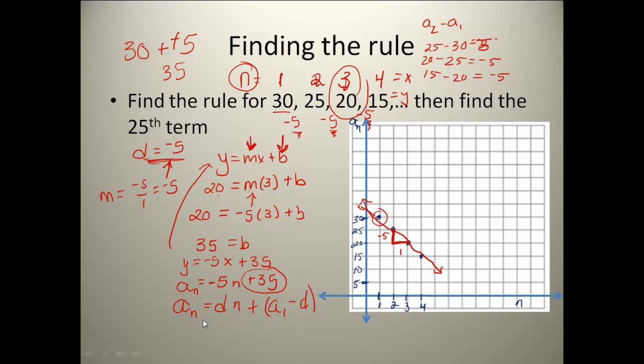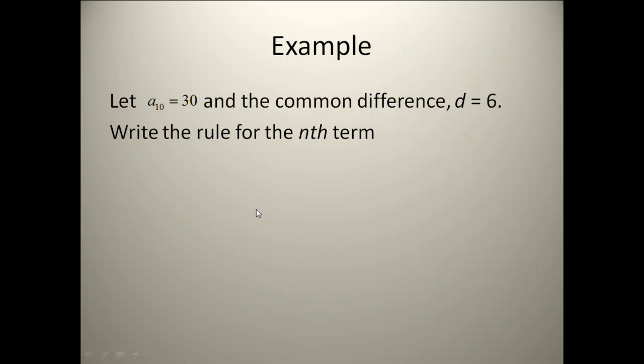This is one way that you can write it, but a more common way would be to rearrange it so that we would have d times n minus d plus that a sub 1. From there, we could pull out a d from these first two terms and end up with a sub n equals d times (n minus 1) plus a sub 1. This last formula is probably the most common formula to use, but you can always resort back to the slope intercept form also.